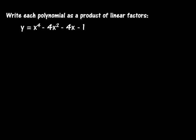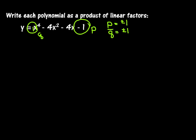Write each polynomial as a product of linear factors. We can do this one by hand. So this is my P, and this, which is a one, is my Q. The products for P are plus or minus one, and the products for Q are plus or minus one. So our possible zeros are plus or minus one.